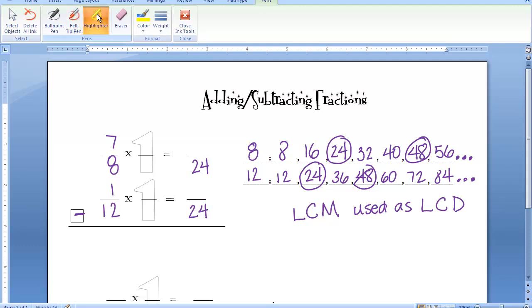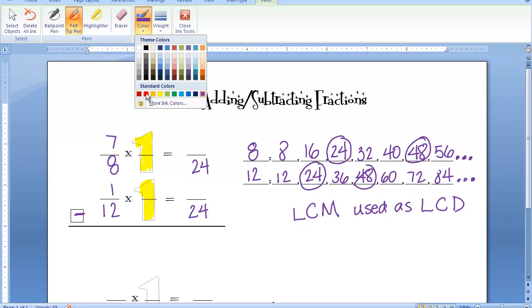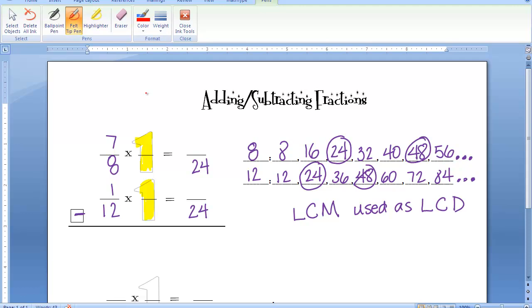Do you remember what we do next? We have to do the multiplying part to get our new numerators. Okay, we'll do the top one first. 8 times 3 is 24. So we're going to do 7 times 3 on top. And our new numerator is 21. And then 12 times 2 is 24. 1 times 2 is 2.